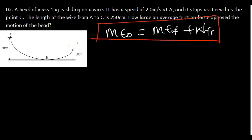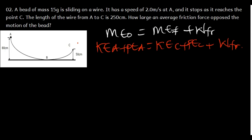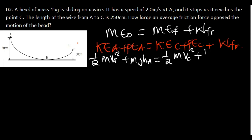Mechanical energy is the sum of kinetic and potential energy. So: kinetic energy at point A plus potential energy at point A equals kinetic energy at point C plus potential energy at point C plus the work done by friction. The work done by friction is the friction force times the distance. Our goal is to find how large the friction force is.